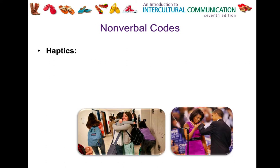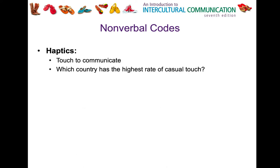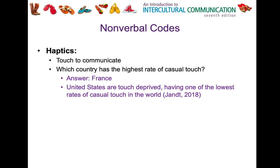Haptics is touch. Touch can signal meaning — friends hugging to say 'hi, good to see you,' or Michelle and Barack Obama fist bumping after a speech to signal 'way to go.' A study on rates of casual touch found that France has the highest rate of casual touch during conversation, and ironically, the United States was seen as touch-deprived, having one of the lowest rates of casual touch in the world.